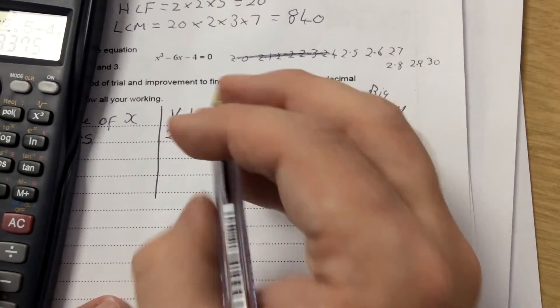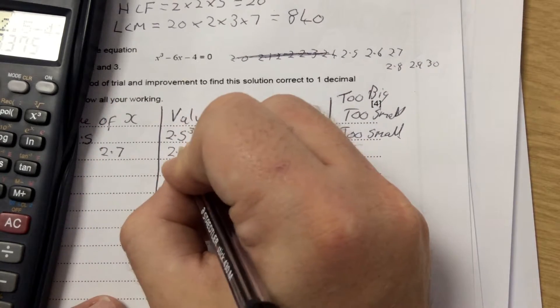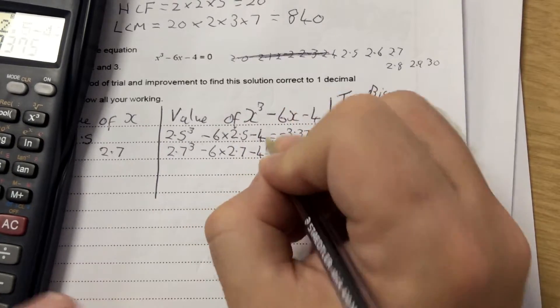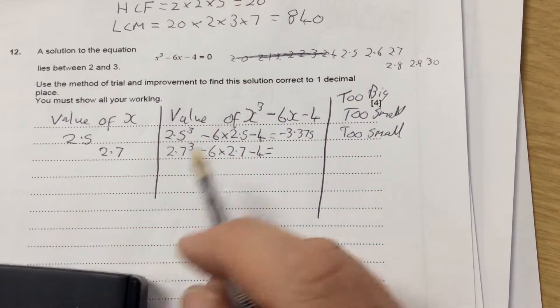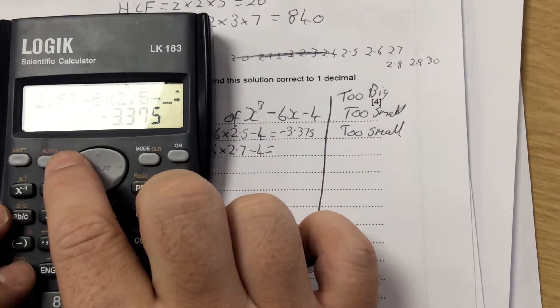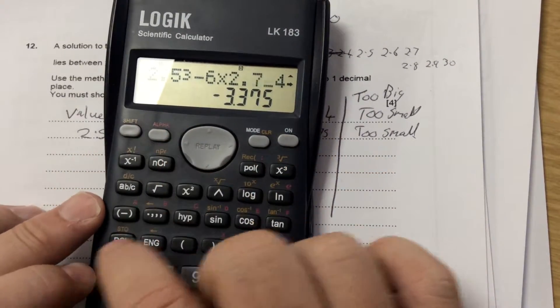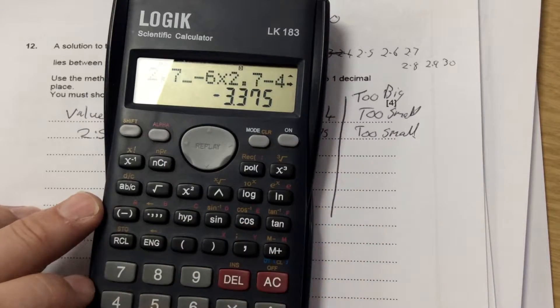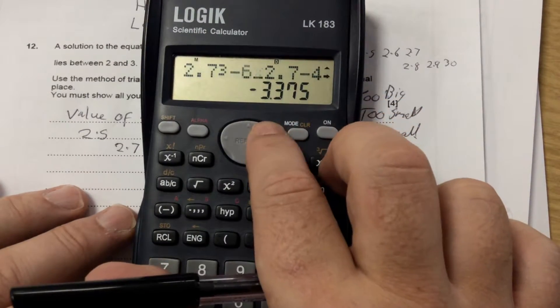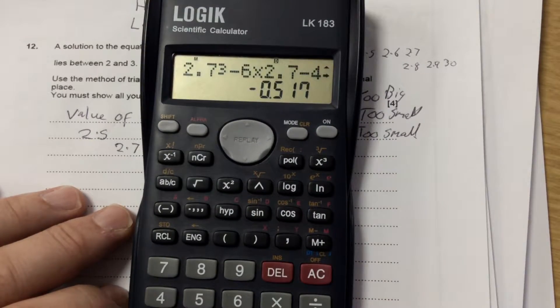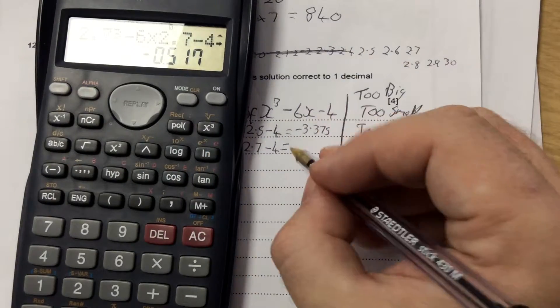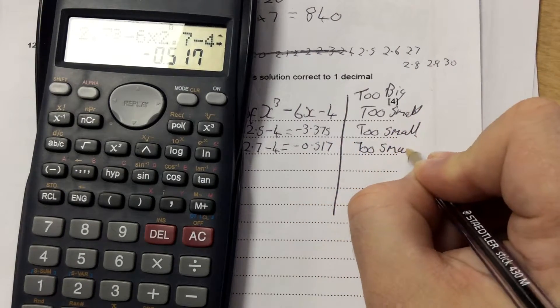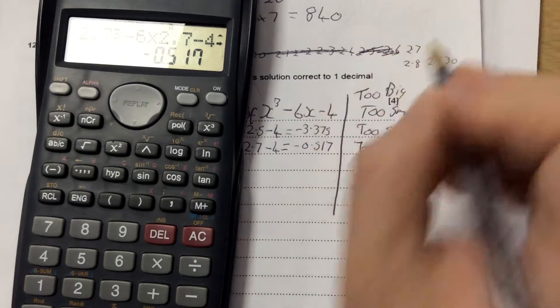So it's now going to be one of these answers. I'm going to try 2.7. So 2.7³ - 6 × 2.7 - 4. Because 2.5 is too small, I'm going to use my replay button up here and change the 5 to a 7. So it becomes 2.7³ - 6 × 2.7 - 4, which is -0.517. So that is also too small. Straight away now I can cross off 2.5 and 2.6.